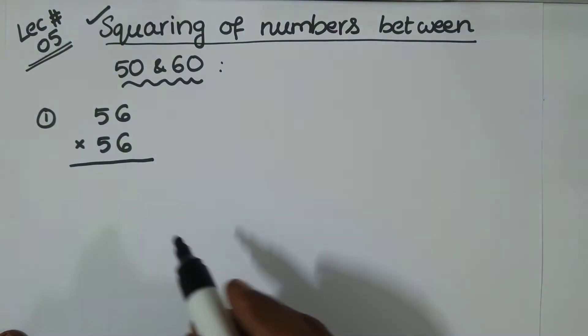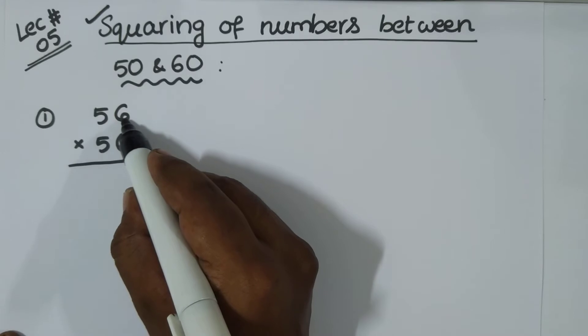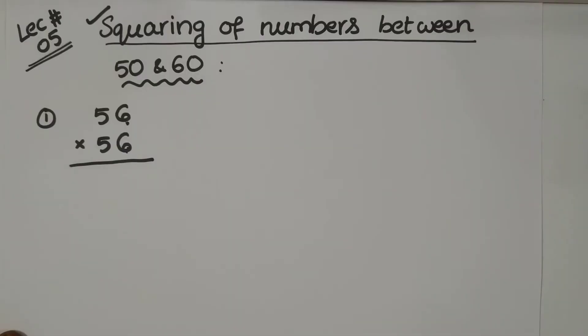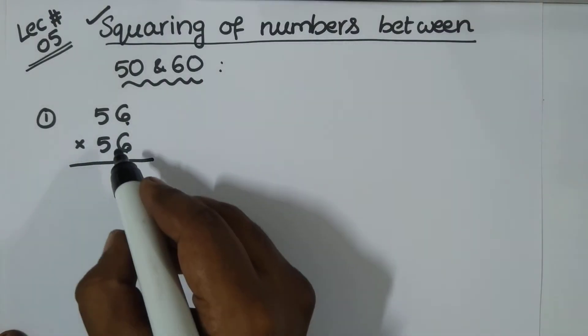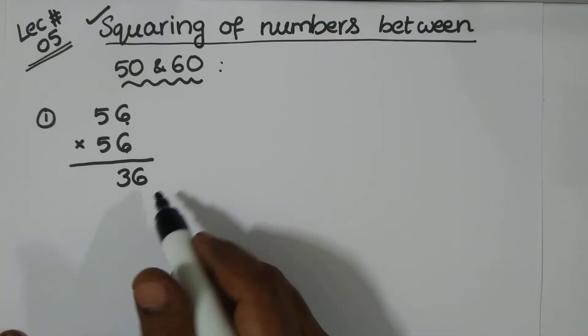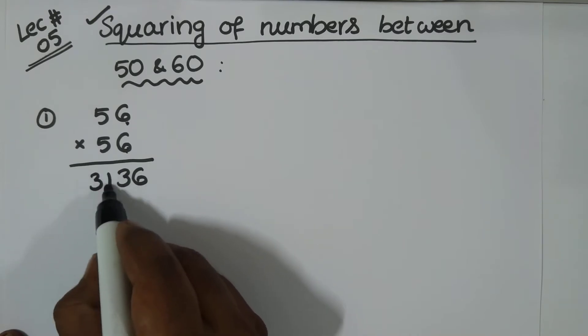So, again now the numbers need not add up to 10 here. You see, we have 6 and 6. 6 plus 6 is 12, not 10 anymore. But still we can do it now. You know how to do it now? See, I would write the answer. 6, 6 is 36. 5, 5 is 25. 25 plus 6 is 31.